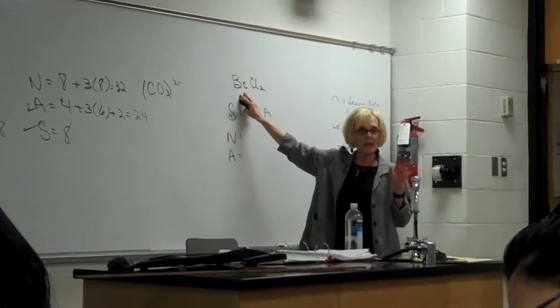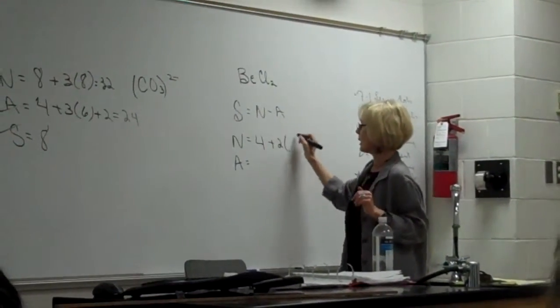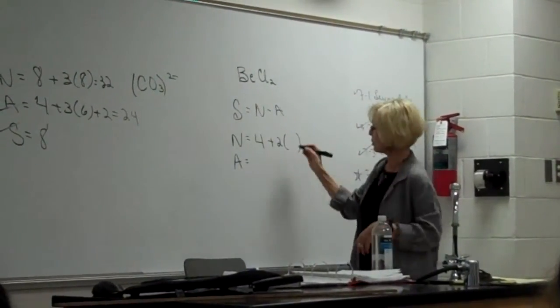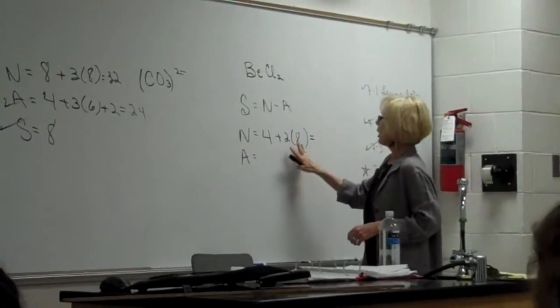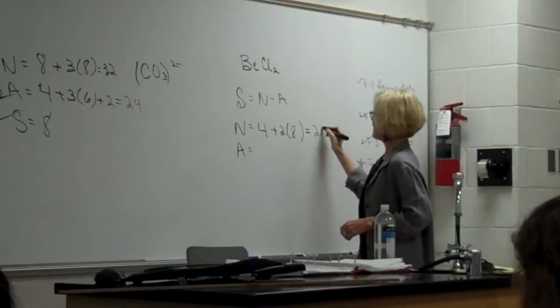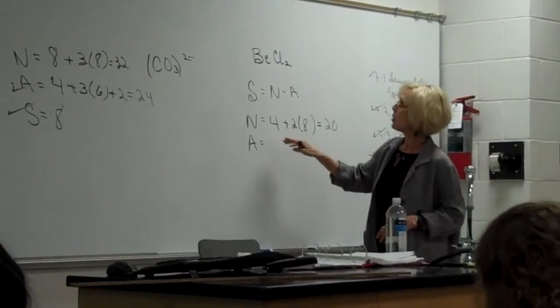Beryllium needs how many, Nina? Four. Each chlorine needs how many, Andrew? Eight. So 16 and four, we have a need of 20. Let's think about what is available.